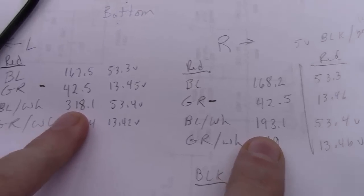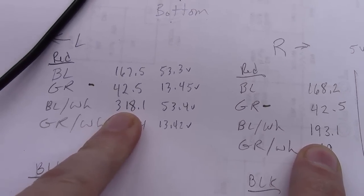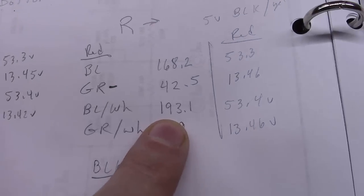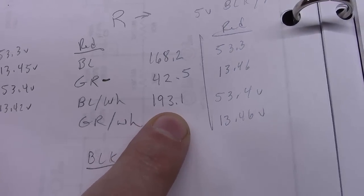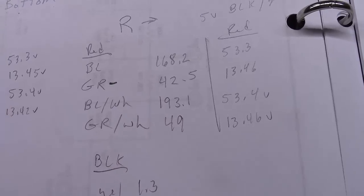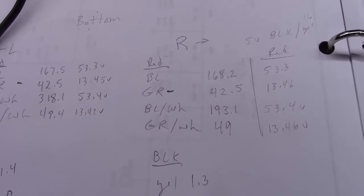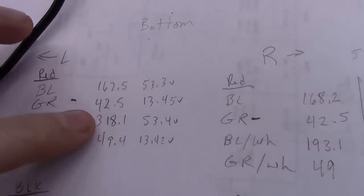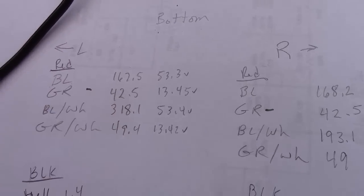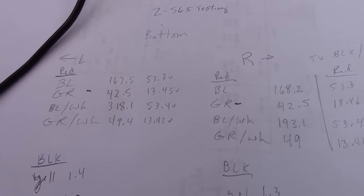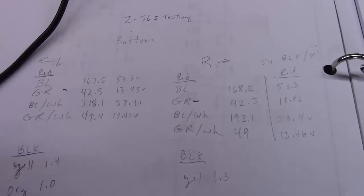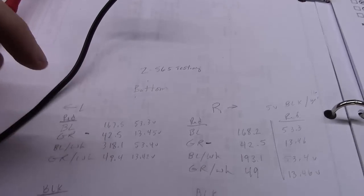This is where things went astray. Blue and white, 318 ohms. And the blue and white over here, 193 ohms. It started blowing my mind. I'm thinking, wow, I may have a bad output transformer here. So then I thought, well, let's think about how we could go about this another way.